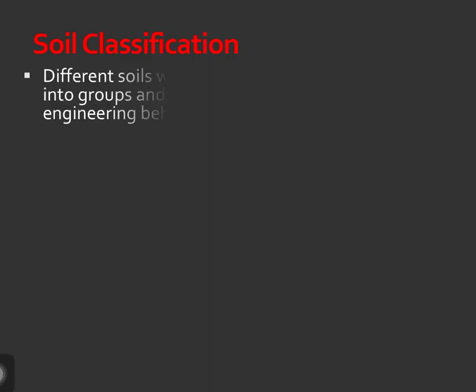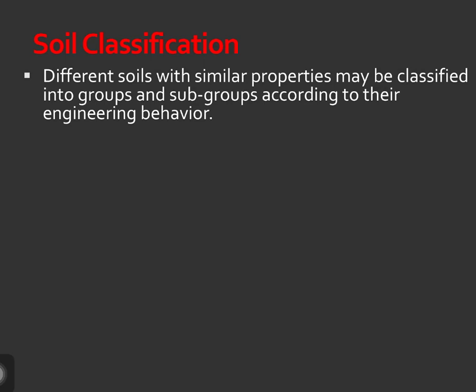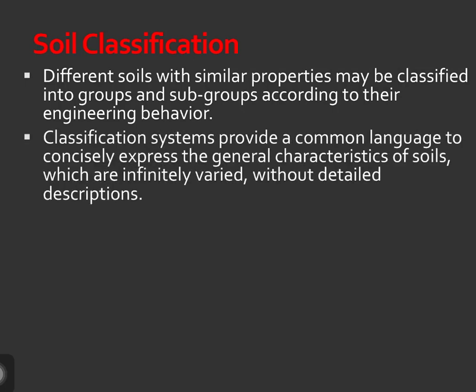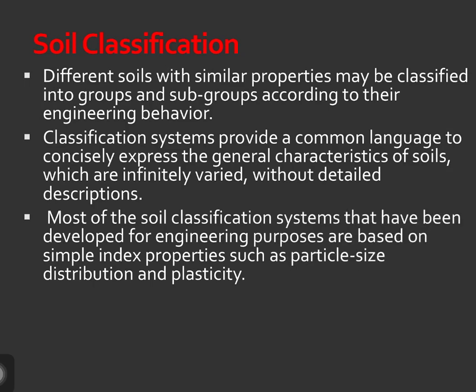Soil Classification: Different soils with similar properties may be classified into groups and subgroups according to their engineering behavior. Classification systems provide a common language to concisely express the general characteristics of soils, which are infinitely varied without detailed descriptions. Most of the soil classification systems that have been developed for engineering purposes are based on simple index properties such as particle size distribution and plasticity.